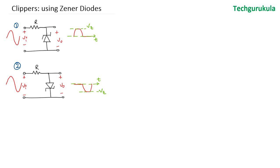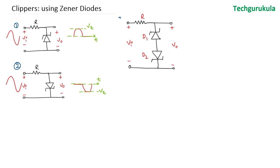In this video, we're going to see a combination of both circuits in one circuit. Let's call this circuit number 3. Both Zener diodes are different so we can understand the operation in more detail. The breakdown voltage of diode 1 is 6 volts and the breakdown voltage of the second Zener diode is 8 volts.